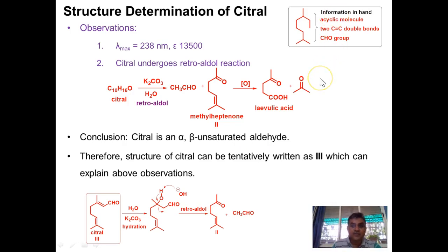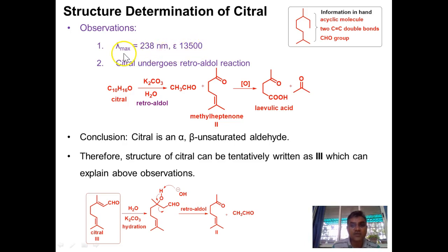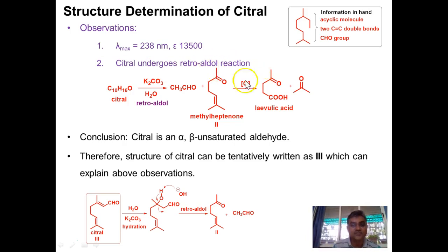Additional evidence for the nature of the CHO group comes from UV spectroscopy. The UV-visible spectrum of citral shows λmax at 238 nm, which is a clear indication of an alpha-beta unsaturated aldehyde. Therefore the aldehyde group in citral is an alpha-beta unsaturated aldehyde. The characteristic reaction of an alpha-beta unsaturated carbonyl is the retro-aldol reaction. Citral on reaction with K2CO3 for a prolonged time forms two carbonyl compounds: acetaldehyde and methyl heptanone.